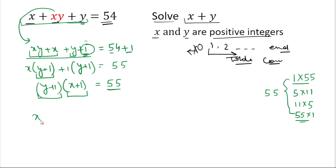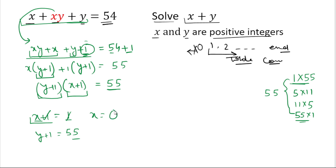If we take x plus 1 equal to 1, then y plus 1 equals 55, giving x equals 0. But in the question, x and y must be positive integers, so x cannot be 0. Therefore the factor pairs 1 times 55 and 55 times 1 are not valid.